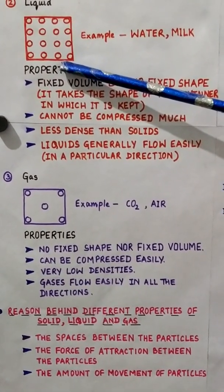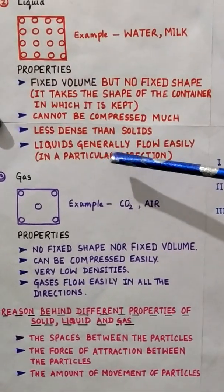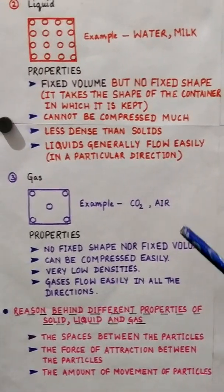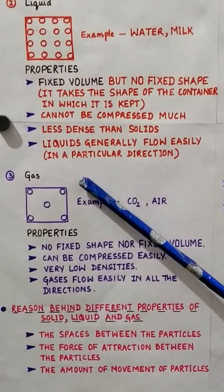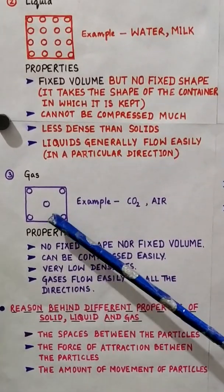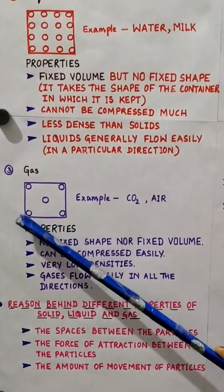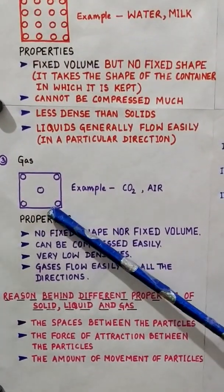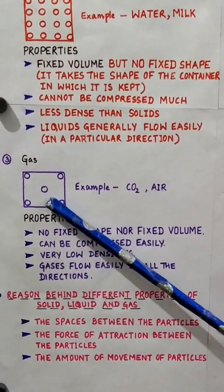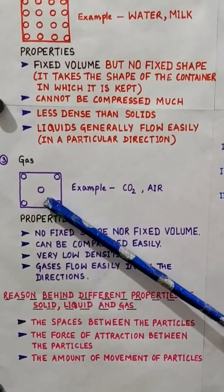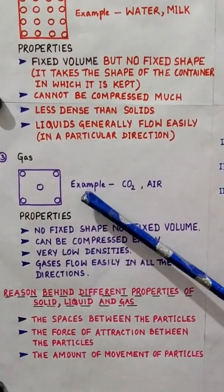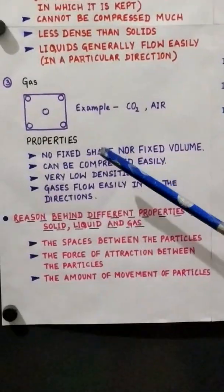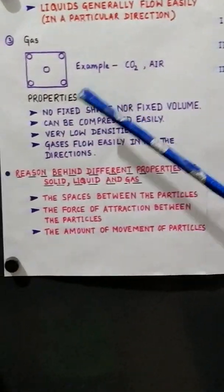Now let us talk about the third state of matter, that is gas. The particles are far apart from each other and so the force of attraction between the particles is very, very less in comparison to that of liquid and solid. Examples of gas can be carbon dioxide, air, oxygen, water vapour, steam, and any other thing.